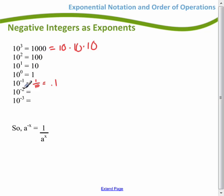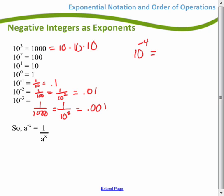Same thing with 10 to the negative 2, that would be 1 over 100. Or I guess I could write that as 1 over 10 squared. Or if I wrote it as a decimal, it would be 0.01. And similarly, 10 to the minus 3 would be 1 over 1,000. Or 1 over 10 cubed. Or 0.001. Go ahead and try to see what 10 to the negative 4th is.